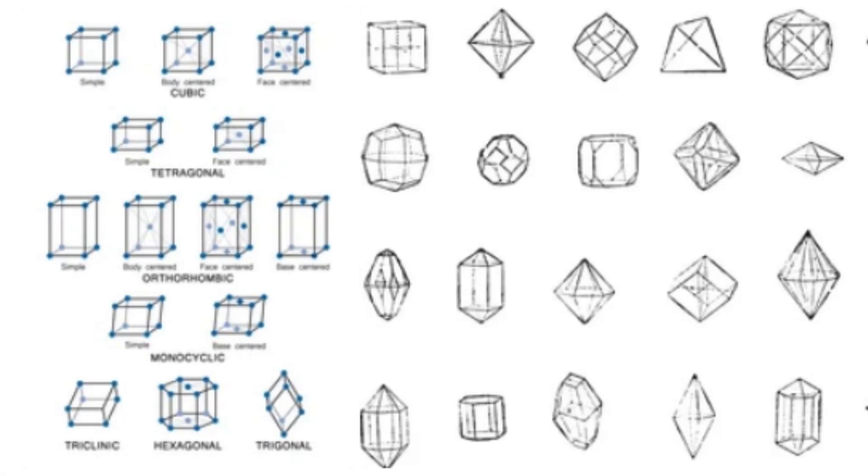Rhombohedral, trigonal system. The trigonal system has three axes of equal length and intersecting at equal angles, 120 degrees. Minerals in this system tend to form rhombohedral or scalenohedral shapes. Calcite and dolomite are notable minerals exhibiting trigonal symmetry.